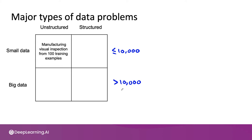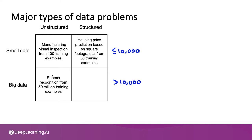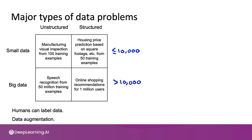Let's look at some examples. If you are training a manufacturing visual inspection from just 100 examples of scratched phones, that's unstructured data — image data — and it's a pretty small dataset. If you are trying to predict housing prices based on the size of the houses and other features from just 50 training examples, that's structured data with real-valued features and a relatively small dataset. If you are carrying out speech recognition from 50 million training examples, that's unstructured data with a lot of data. Or if you are recommending products in online shopping and you have a million users in your database, that's a structured problem with a relatively large amount of data.